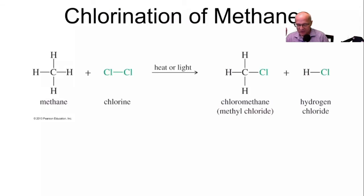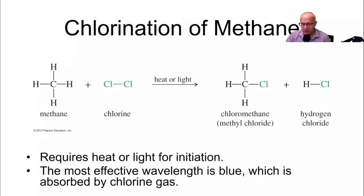Let's look at our first mechanism. We're going to explain how methane can react with chlorine in the presence of heat or light to give chloromethane. The first thing you want to notice is that the reaction requires heat and or light to start the reaction. Notice the most effective wavelength is blue, which is absorbed by the chlorine gas. So this is a big hint about what happens first in this reaction.